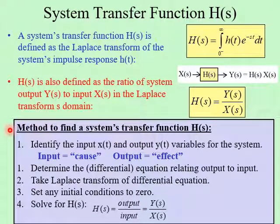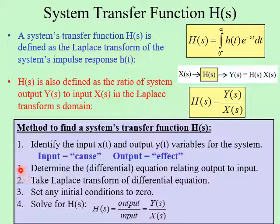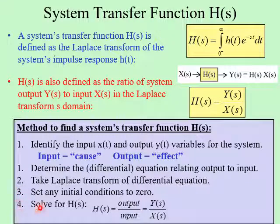In this video, we're going to look at six different examples of finding the transfer function. The method we will follow is: first, identify the input and output variables — the input is the cause and the output is the effect. Second, determine the differential equation that relates the output to the input. Third, take the Laplace transform of the differential equation and set any initial conditions to zero. Finally, solve for H of S, which is the output Y of S over the input X of S.